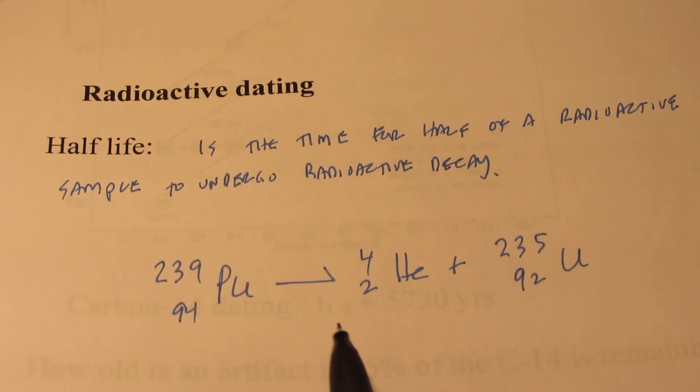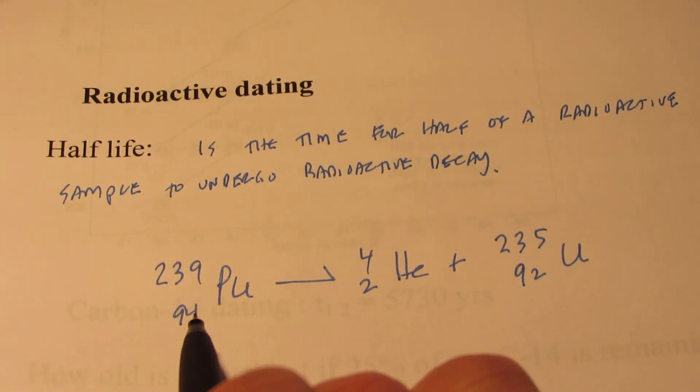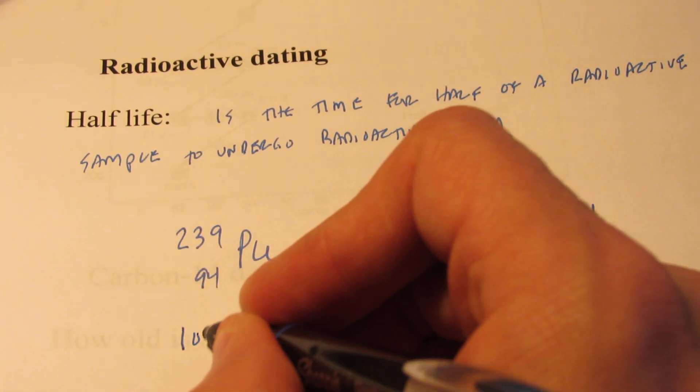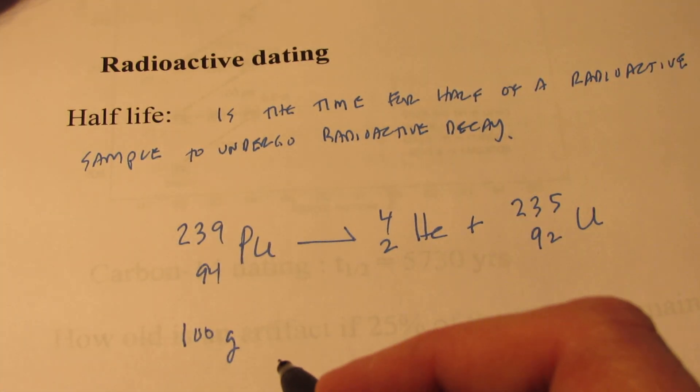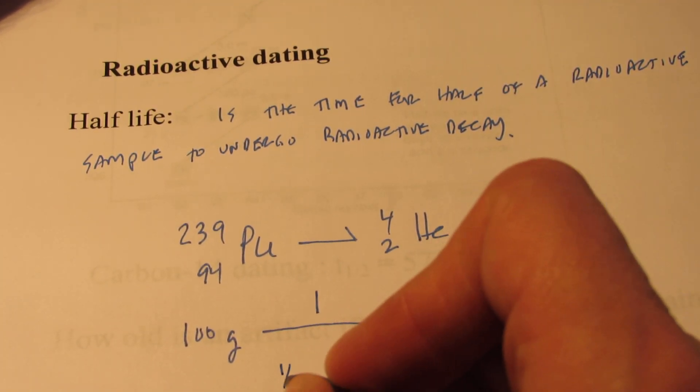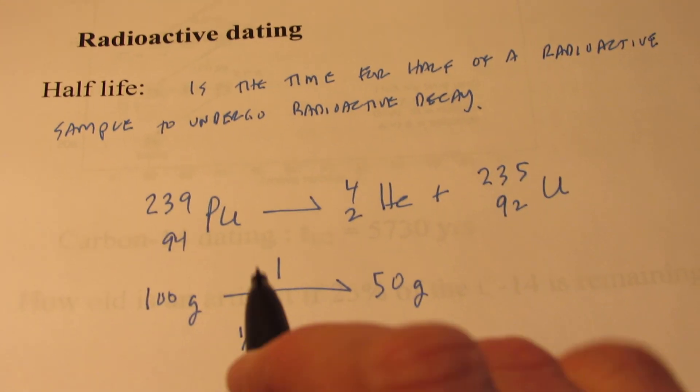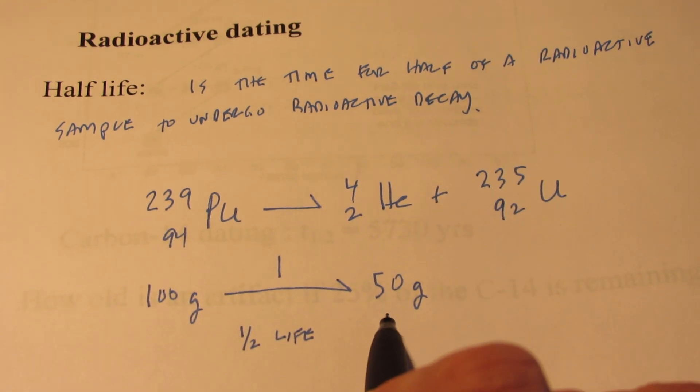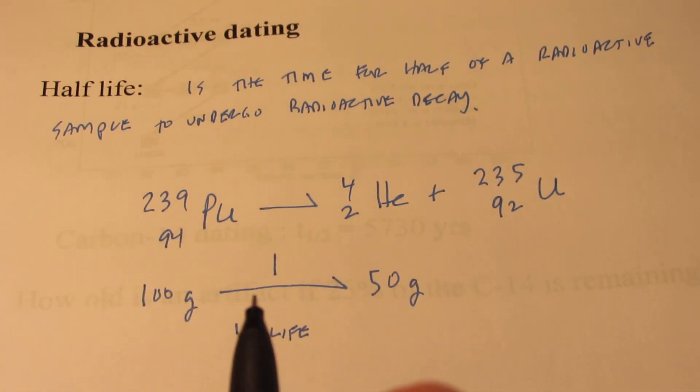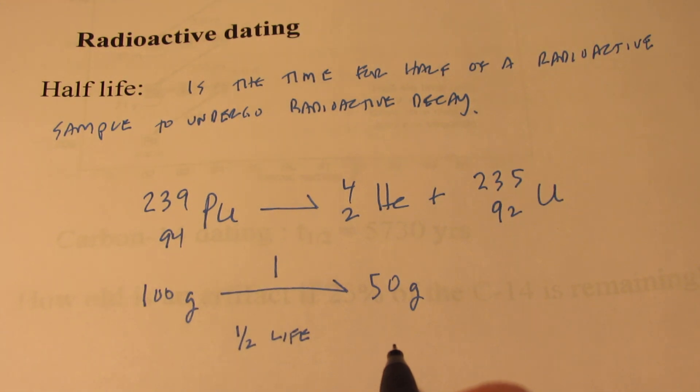Now a common misconception is that after two half-lives, the radioactive sample will completely disappear, which is not the case. Let's say we begin with 100 grams of pure plutonium-239. After one half-life, we would have 50 grams remaining. Now some half-lives are measured in microseconds, very short. Others are measured in billions of years.